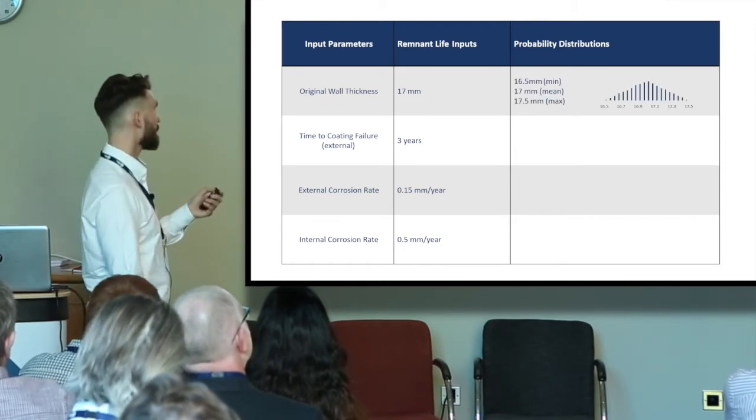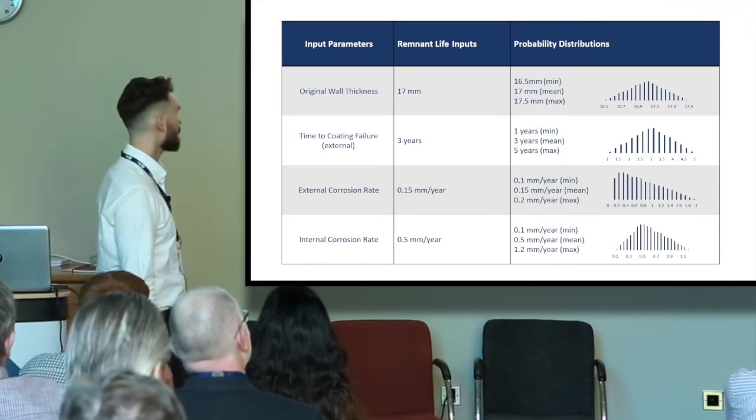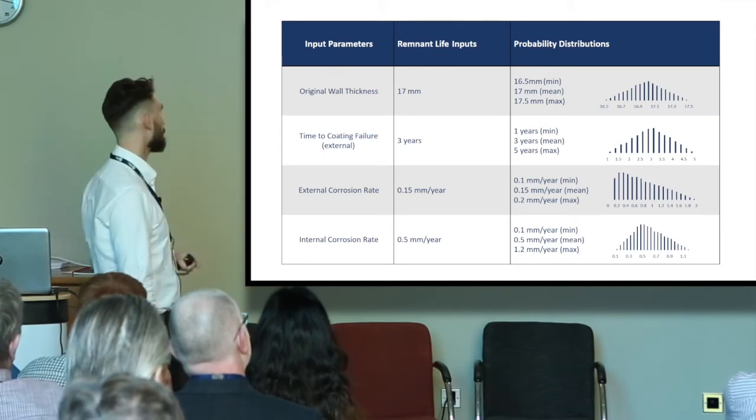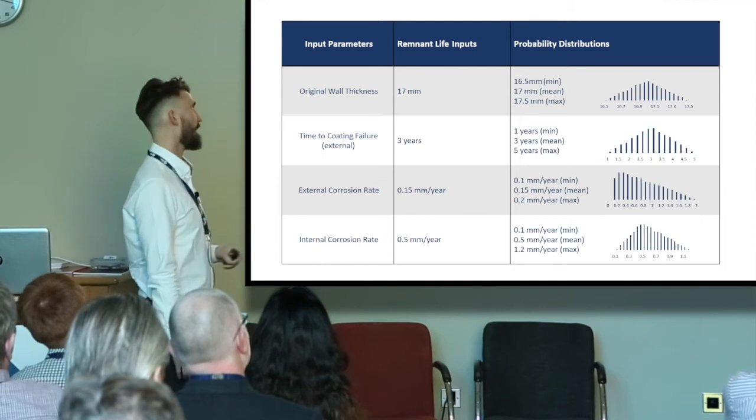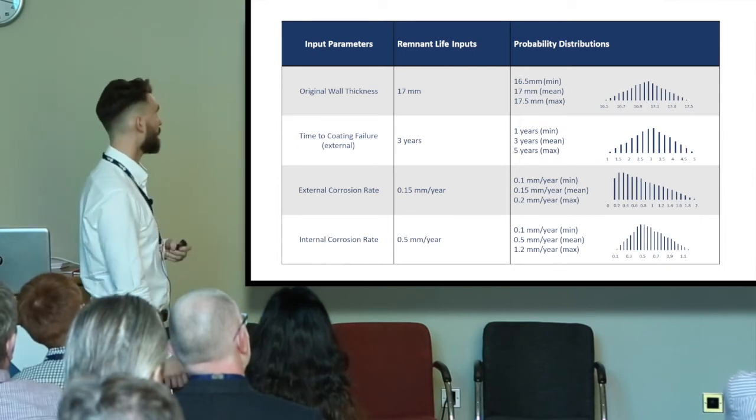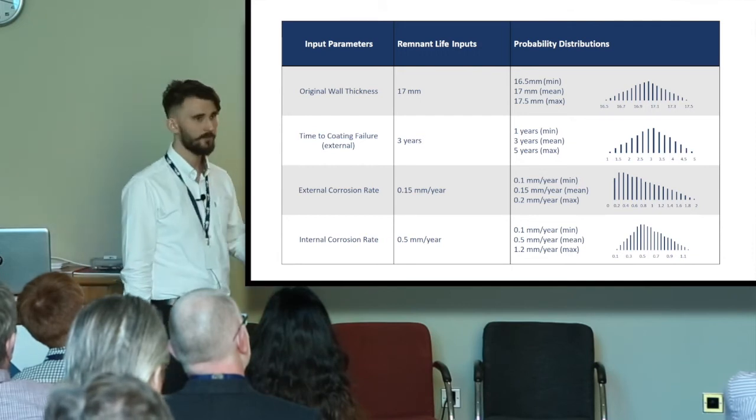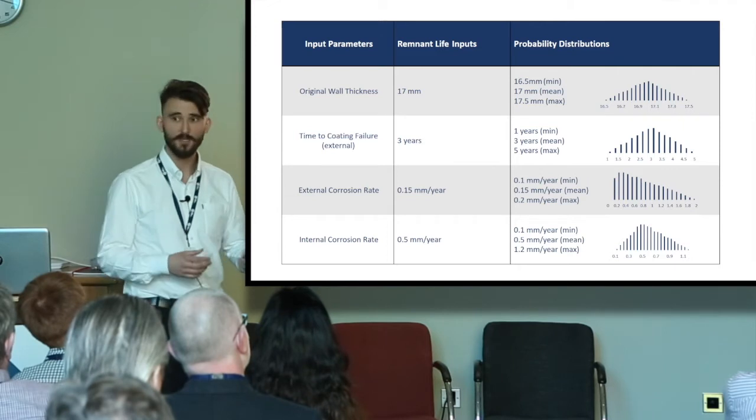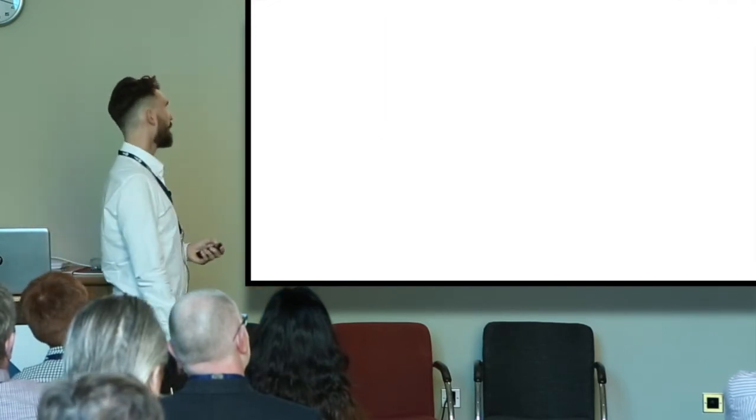Once it fails, the external corrosion rate will be 0.15 millimeters per year, internal corrosion rate is 0.5 millimeters per year. For the Monte Carlo simulation, we'll put in our probability distributions. I've just taken some simple ones here where I've put in our inspection tolerances around the original wall thickness and some uncertainties surrounding the time to coating failure, external corrosion rate, and internal corrosion rate. These distributions can come in all shapes and sizes depending on the scenario.